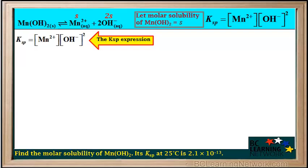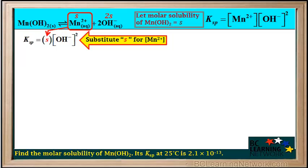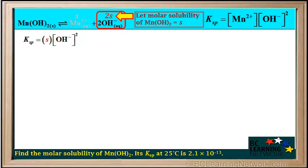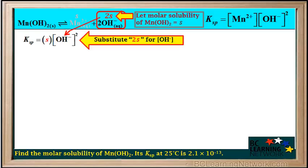Now we'll determine the value of the molar solubility S. We'll start by writing the Ksp expression. The concentration of Mn²⁺ is equal to S, so we'll substitute S in for the concentration of Mn²⁺. The concentration of OH⁻ is equal to 2S, so we can substitute 2S for the concentration of OH⁻ in the Ksp expression. Note that the concentration of OH⁻ is still squared in the Ksp expression.